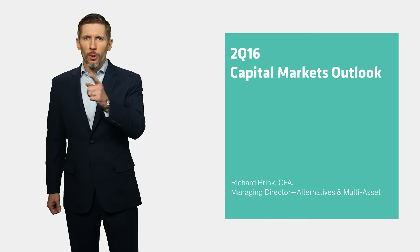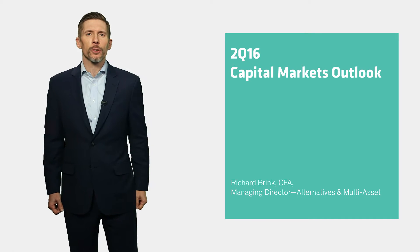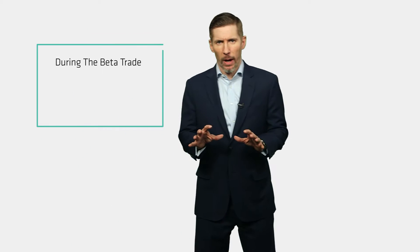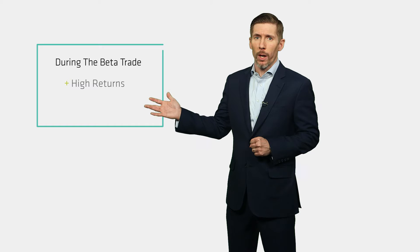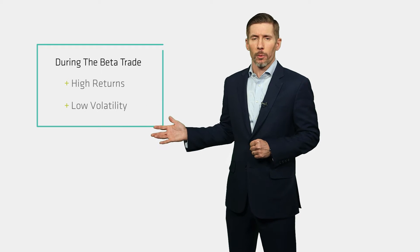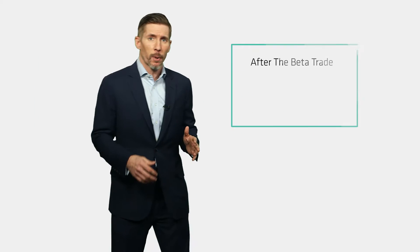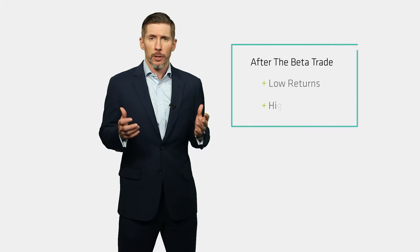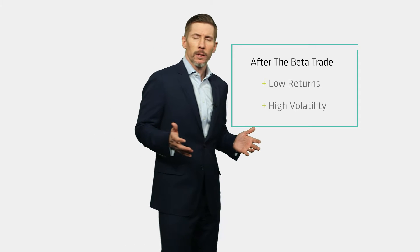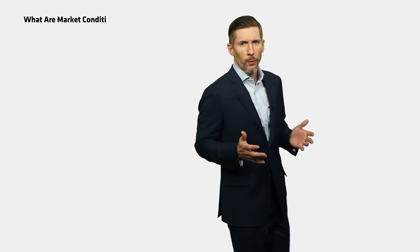Hello everyone. Three quarters ago we introduced the notion of the end of the great beta trade and the idea that the previous five years, which had been characterized by well above normal market returns with well below normal levels of volatility and dispersion, were about to change and be replaced by a period of more muted returns with much higher and sharper levels of volatility. That volatility was so sharp in the first quarter,